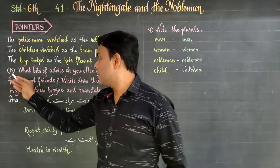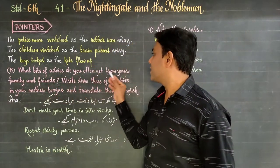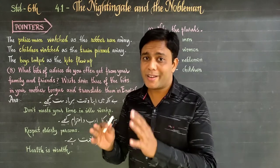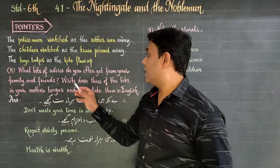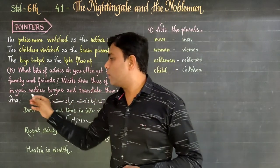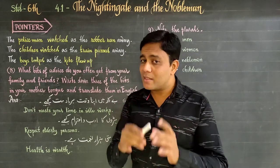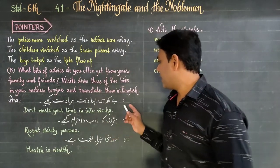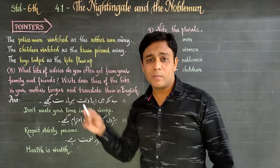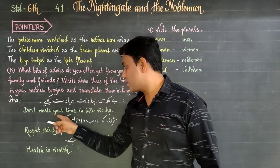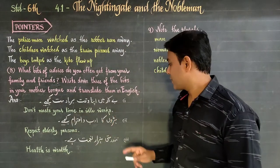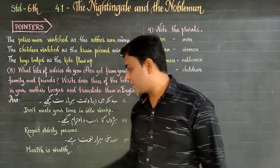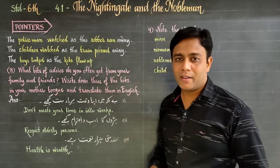Question number eight: what bits of advice do you often get from your family and friends? Write down three of them in your mother tongue and then translate them into English. For example: don't waste your time in idle works; respect elderly persons; health is wealth.